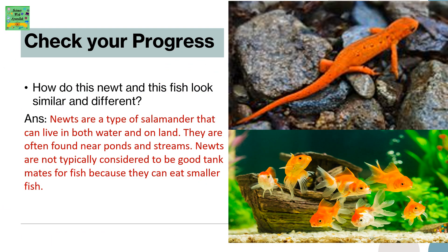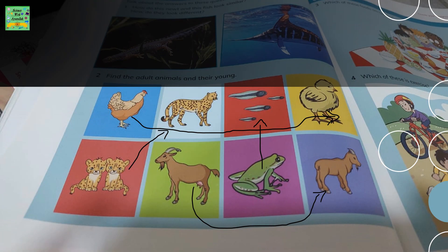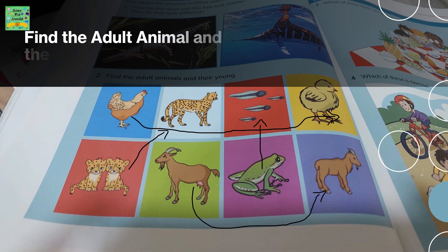Check your progress: how do this newt and this fish look similar and different? Newts are a type of salamander that can live in both water and on land. They are often found near ponds and streams. Newts are typically considered to be good tank mates for fish because they can eat smaller fish. Find the adult animal and their young.